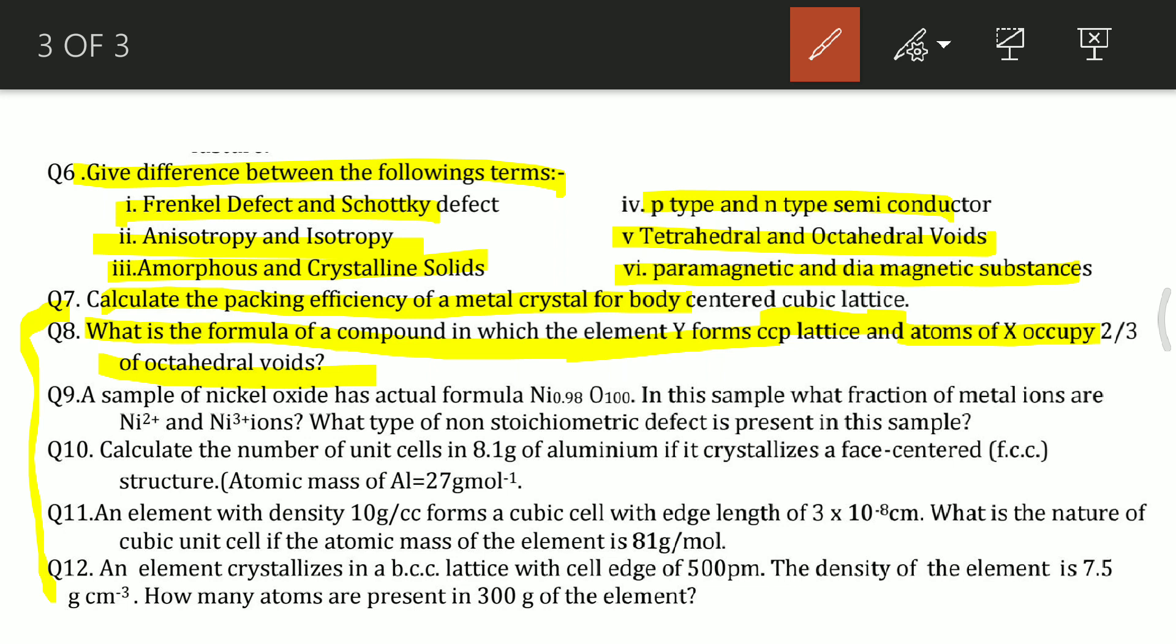Question 9: a sample of nickel oxide has actual formula Ni 0.98 O. In this sample, what fraction of metal ions are Ni2+ and Ni3+ ions? What type of non-stoichiometric defect is present? Question 10: calculate the number of unit cells in 8.1 gram of aluminium if it crystallizes in a face-centered FCC structure.